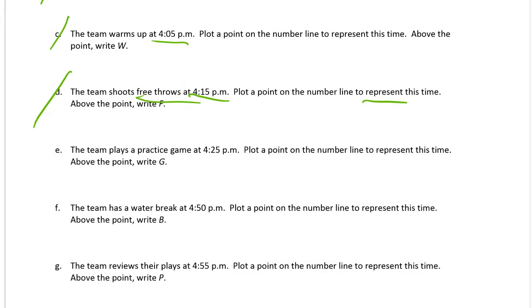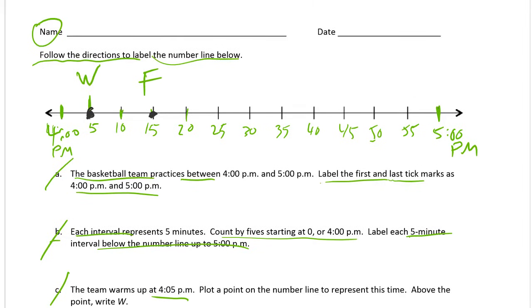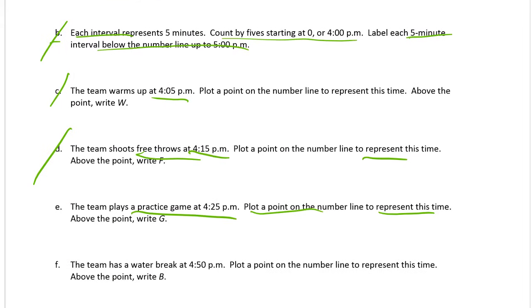Part E. The team plays a practice game at 4:25. Plot a point on the number line to represent this time. Represent usually means show or draw or describe. Usually you're writing a number sentence or you're drawing a picture. In this case we're just plotting a point. And we're going to write G above 4:25. So let's see, 4:25, that's right here. And we're going to write a G above that. And we're done with part E.